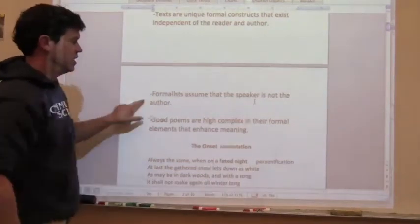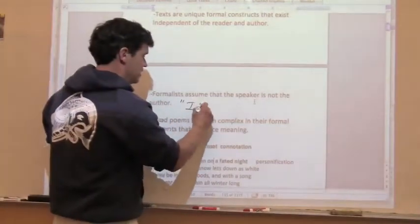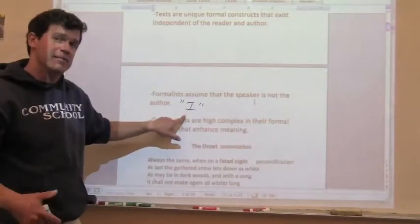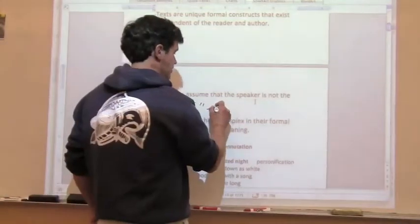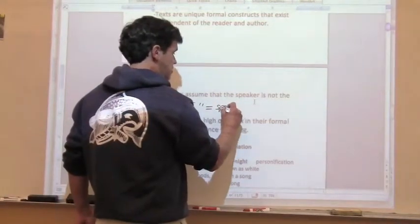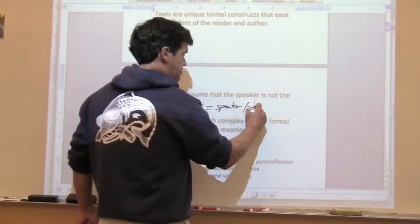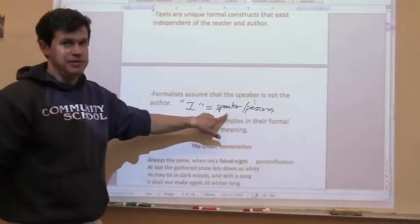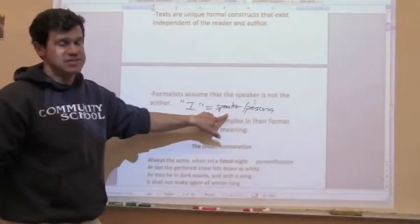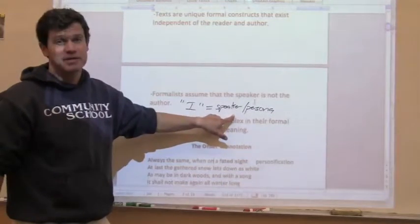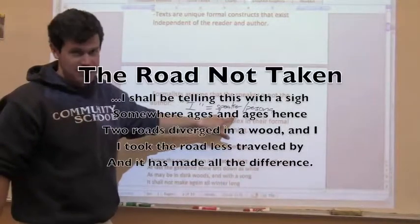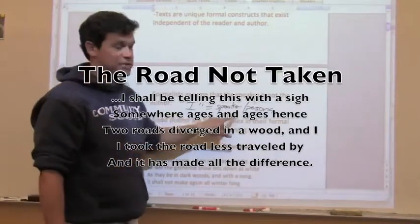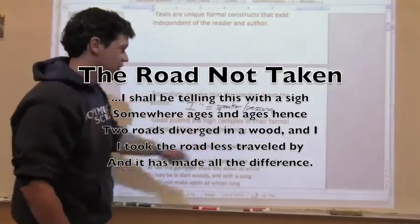Formalists assume that the speaker is not the author, so the first person I in a poem is not necessarily Robert Frost. It can be a persona or a speaker, and it can be someone—if you're a male poet, you could write from the perspective of a female speaker. If you are a young poet, 16 years old, you could write a poem from the perspective of an older man. 'Road Not Taken,' Frost's famous poem, written from the perspective of an old man, was written when Frost was 34 years old. So separate the I from the speaker.